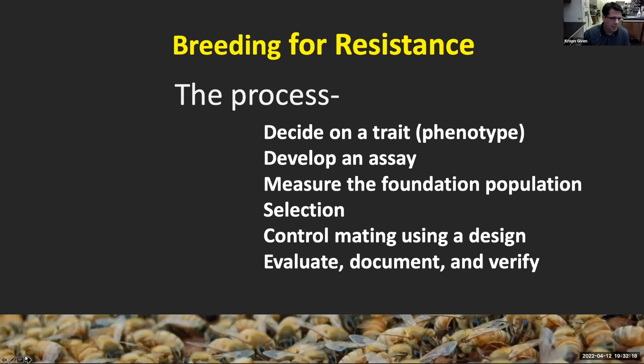Breeding for resistance is a process. The first thing you need to do is decide on a trait or a phenotype. You want to develop an assay, then measure the foundation population, and then select from that, then use controlled mating using a design, and then you want to evaluate, document, and verify.